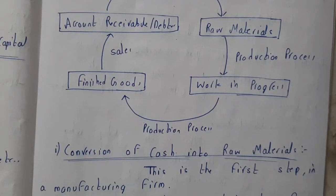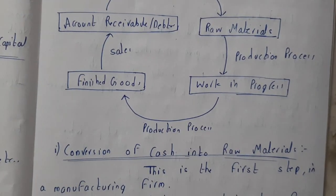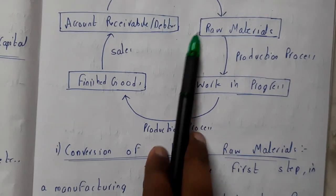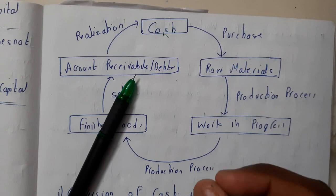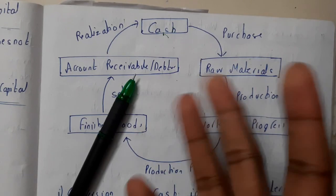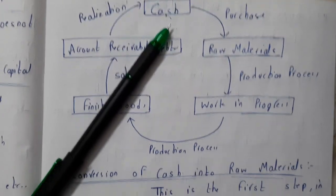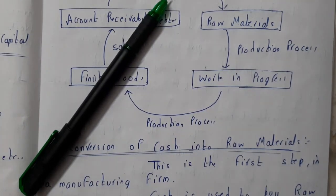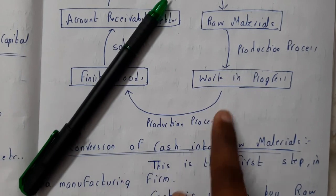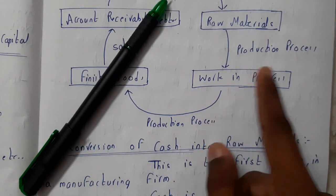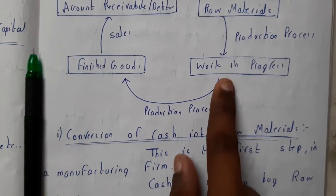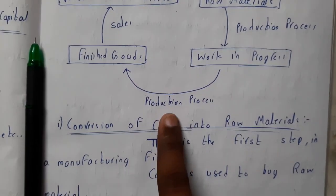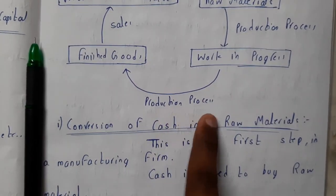Let me go through the diagram and then the explanation. Initially, with cash you purchase raw materials. You then send those raw materials to your production unit and ask them to produce some kind of product. This is the work in progress stage, and at the end of the production process you get finished goods.